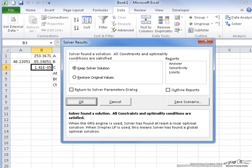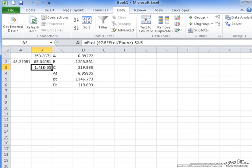what we come up with is a solution such that the temperature is 48.22. Our vapor pressure for benzene is 253.4 millimeters of mercury, and our vapor pressure for toluene is 85.4 millimeters of mercury.